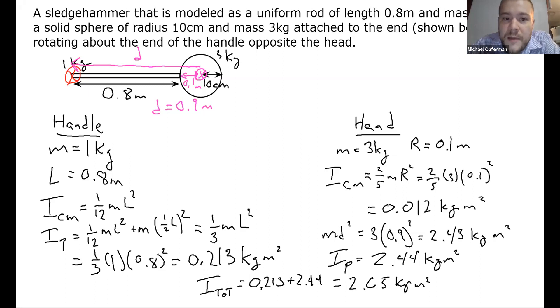And when you apply parallel axis theorem to move the axis of rotation to that location, make sure that you are moving it from the center of each object whose ICM you are looking up in the table. You have to start at the center of the object, and then you have to end up at the actual axis of rotation when you calculate those d values for parallel axis theorem.